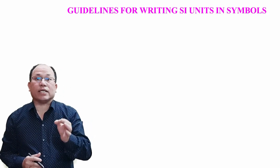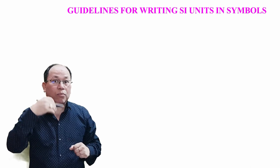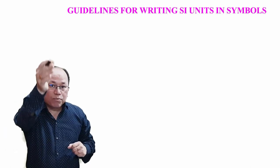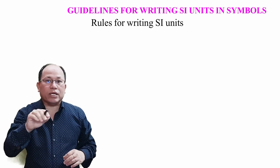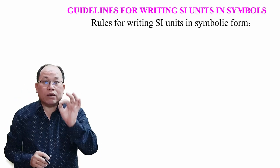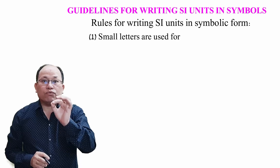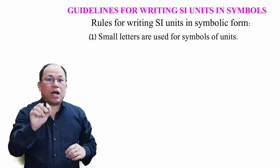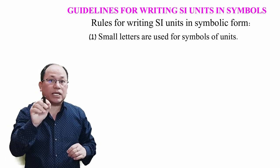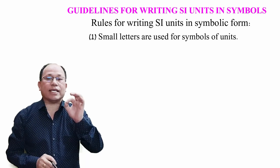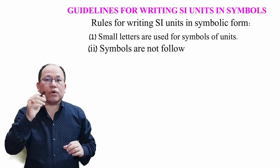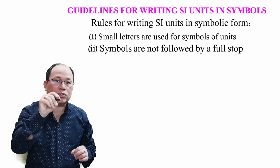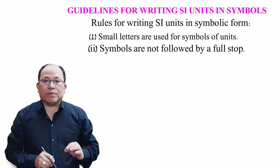Guidelines for writing SI units in symbols. Rules for writing SI units in symbolic form. First point: small letters are used for symbols of units, like second, small letter s. Symbols are not followed by a full stop. Third point, the initial letter of a symbol is capital only when the unit is named after a scientist.